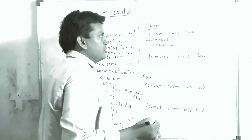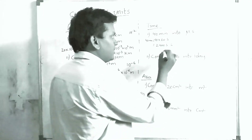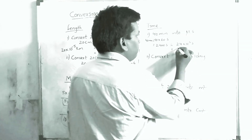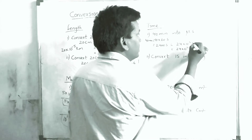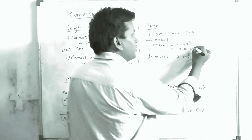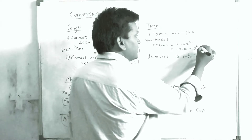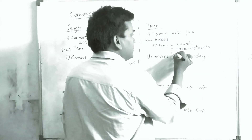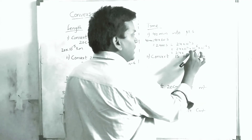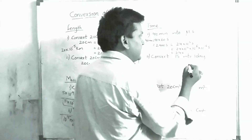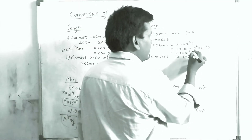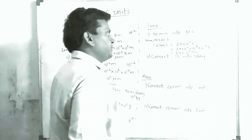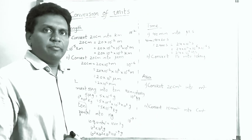These 2400 seconds have to be converted into microseconds. 2400 can be written as 24 × 10² seconds. So 24 × 10² × (micro value) = 24 × 10² × 10⁶ × 10⁻⁶ seconds. Adding powers: 6 + 2 = 8. So 40 minutes equals 24 × 10⁸ microseconds.